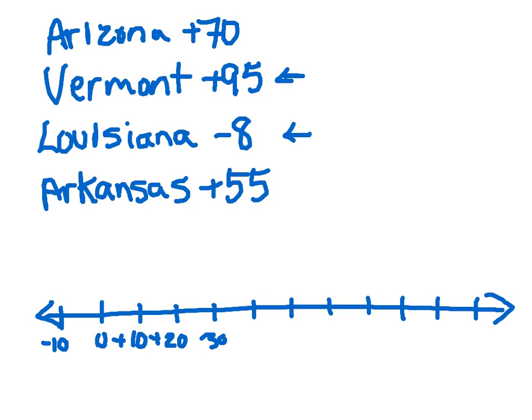So let's go ahead and label these: 40, 50, 60, 70, 80, 90, and 100. On your paper, I want you to make sure that anything on the left side of 0 has a negative sign, and on the right side you're going to have pluses on whatever interval you do.